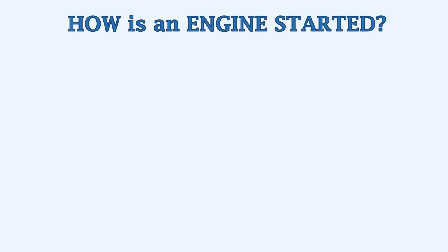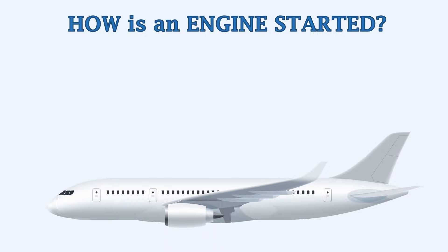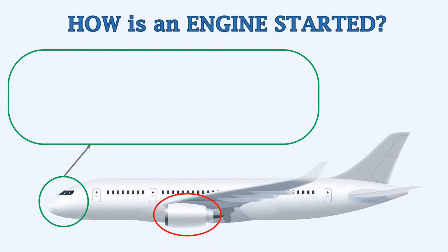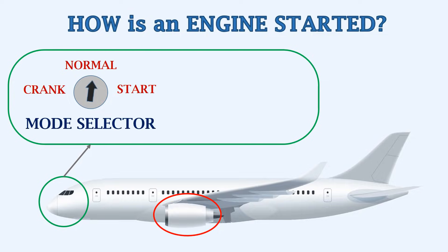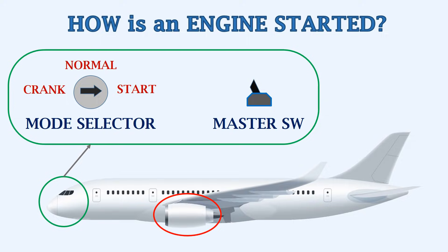First let's see how is the engine started. For starting the engine, switches are provided in the cockpit. The first step is to set the mode selector switch to the start position. Then there is an engine master switch that should be set to on. This initiates the start cycle of the engine.